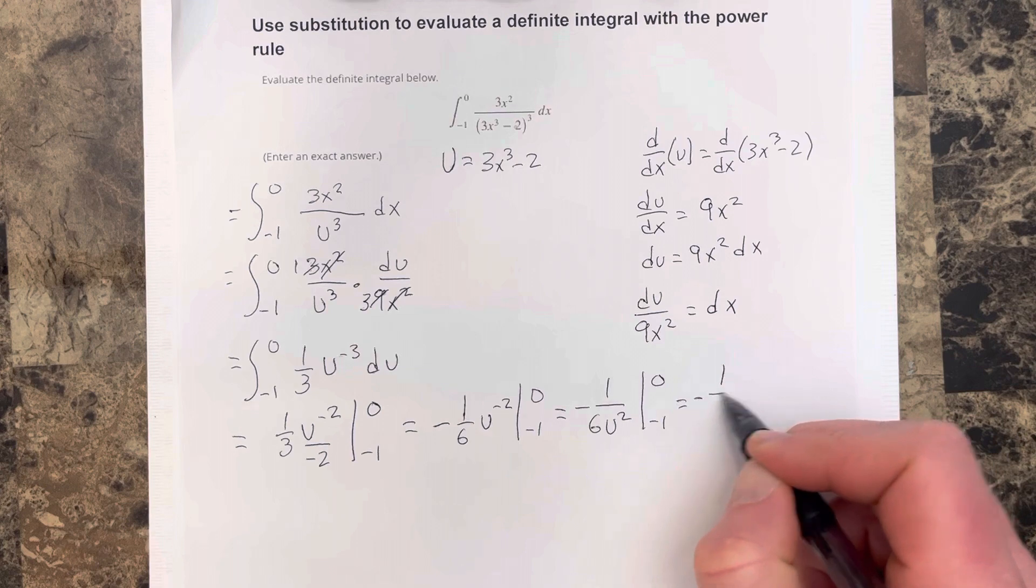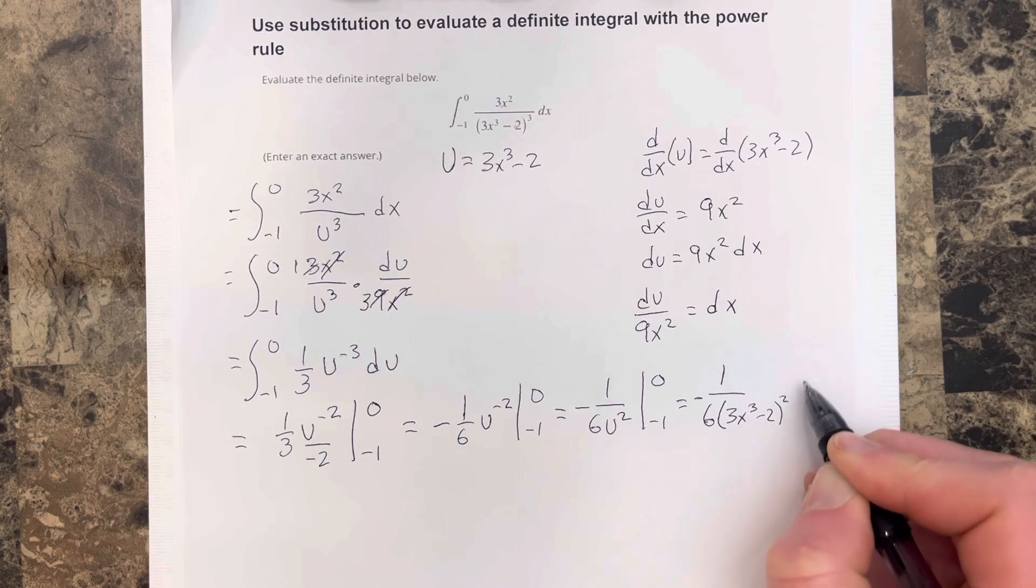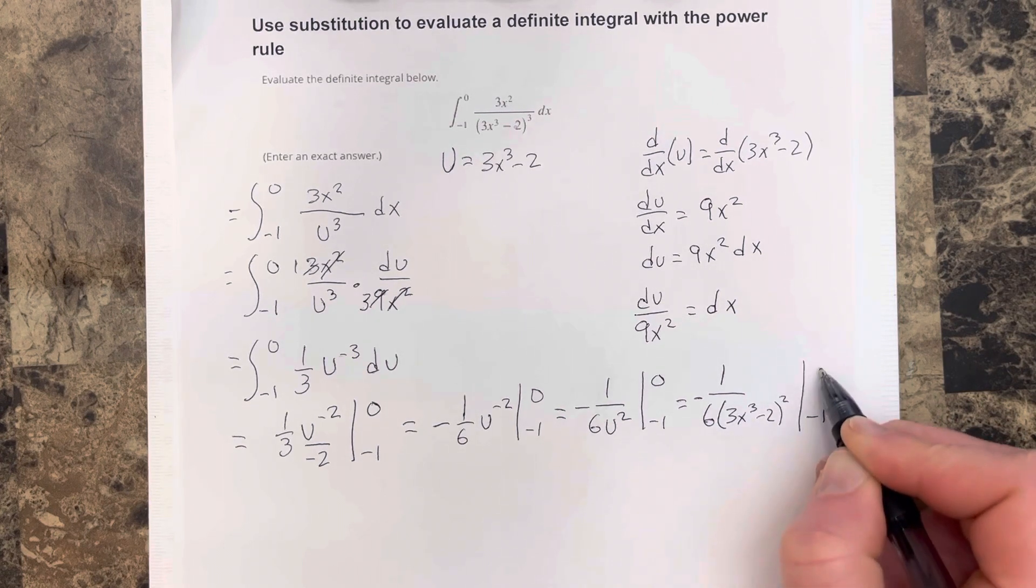So I get negative 1 over 6, 3x cubed minus 2 squared. We're going to evaluate that from negative 1 to 0.